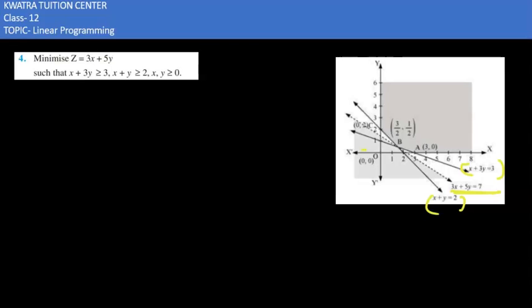Here we can see we have obtained two shaded regions: one is the downward region and second is the upward region. Now when we find our values of corner points, the corner points are: